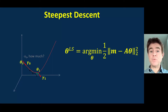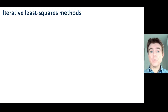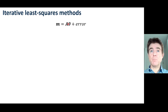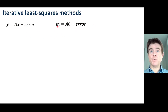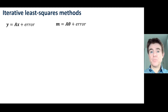In this video I will cover the steepest descent algorithm. This is an example of an iterative least squares method where what we're trying to do typically is model some measured data vector M through a system matrix, a system model operating on some parameter vector theta. It might also be written as some data vector Y being modelled by some system matrix A operating on a vector X. There is in general an error — a discrepancy between these two — as the model won't match the measured data due to noise or other modelling inconsistencies.